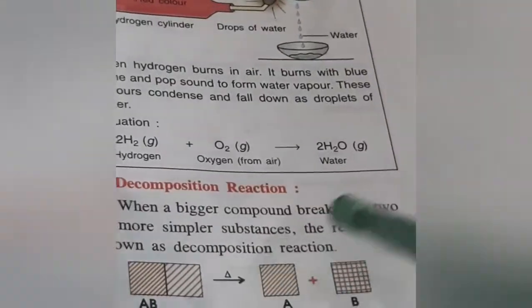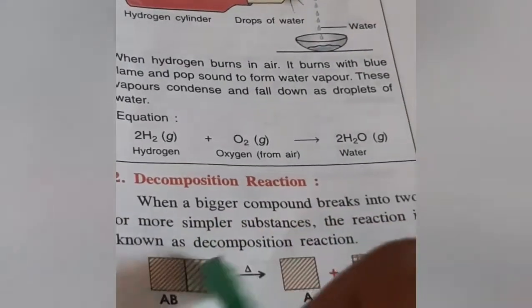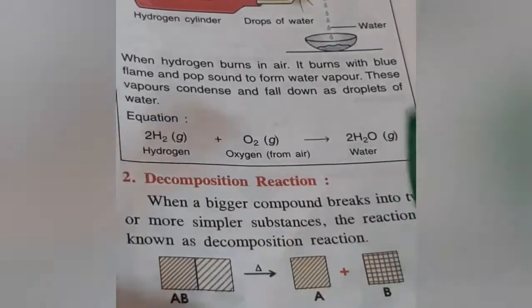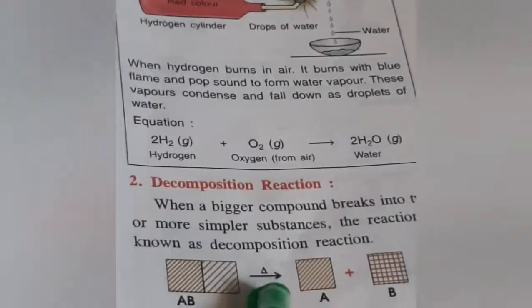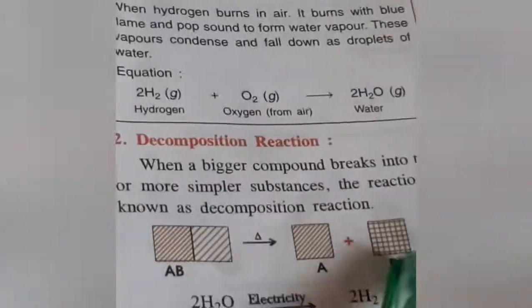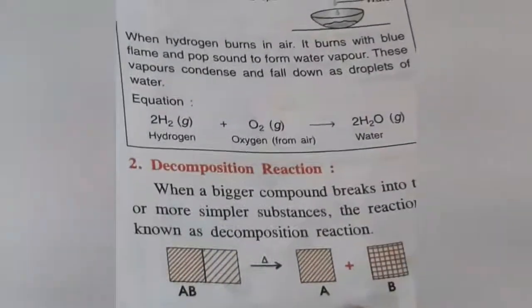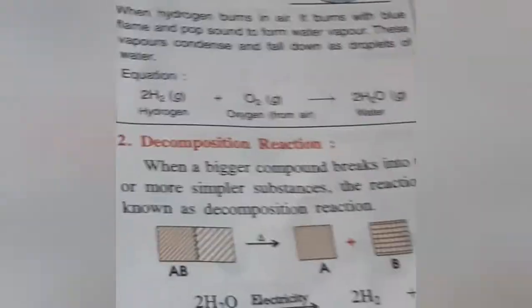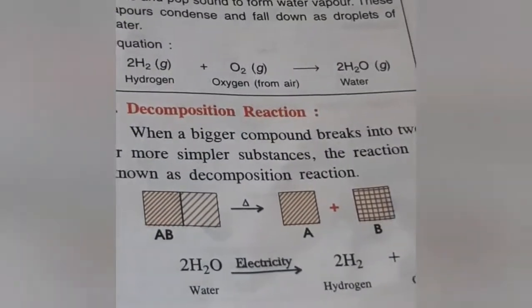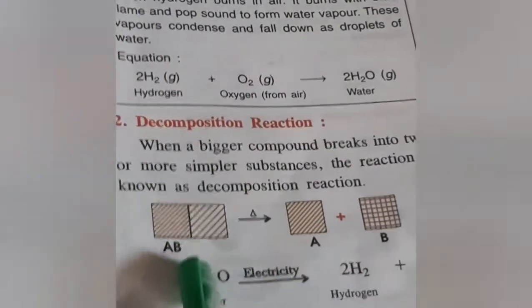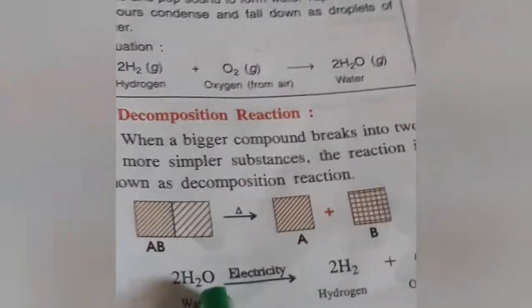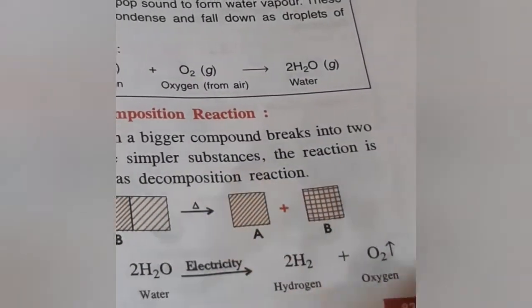When a bigger compound breaks into two or more simpler substances, the reaction is known as decomposition reaction. It means one reactant AB produces two products, A alone and B alone. For example, 2H2O with electricity produces hydrogen alone and oxygen alone.